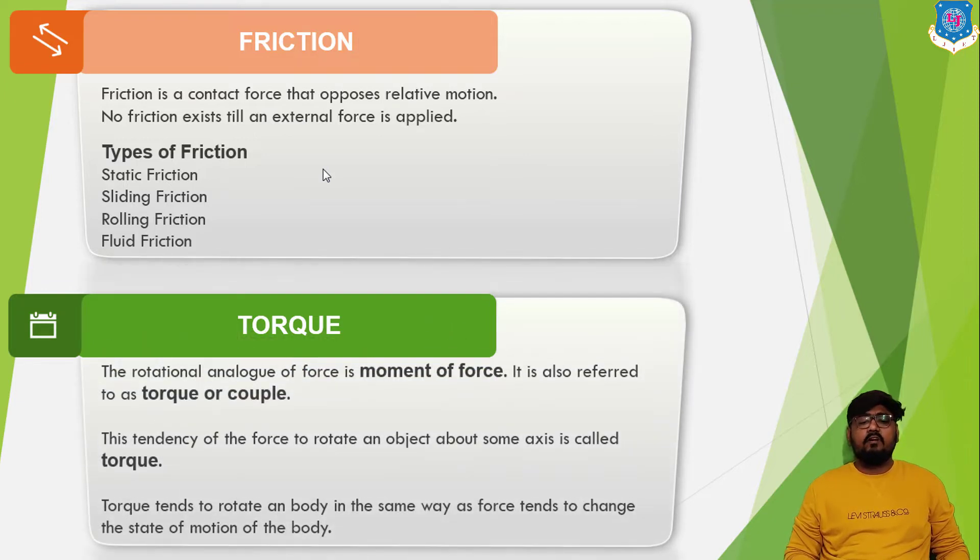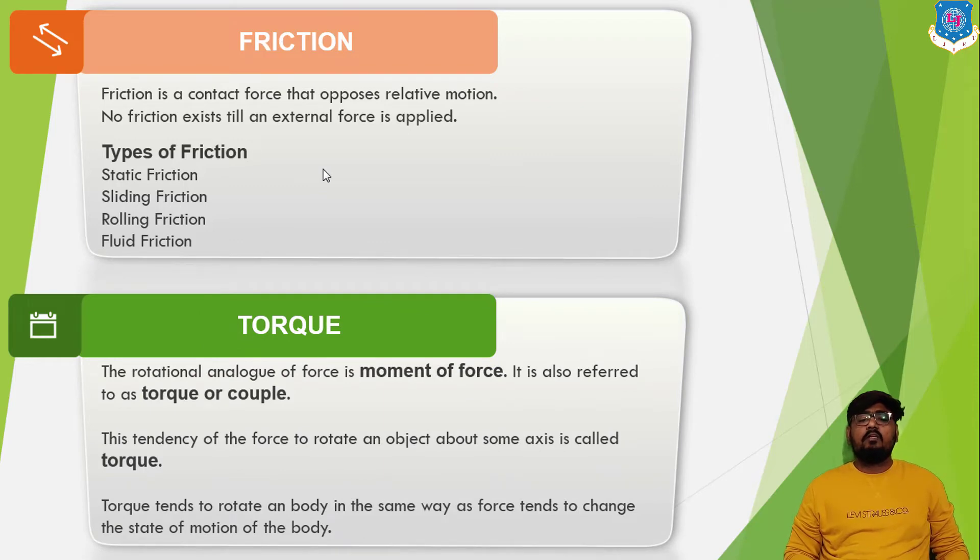Hence, the torque can be defined as rotational equivalence of linear force. The point where the object rotates is known as axis of rotation. In physics, torque is simply the tendency of a force to turn or twist. Different terminologies such as momentum or moment of force are interchangeably used to describe the torque.